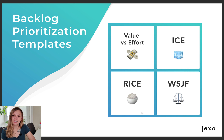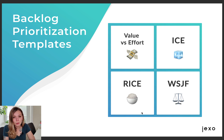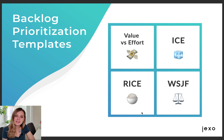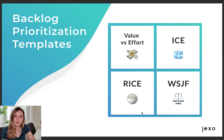A great first step to fixing these problems is to standardize your prioritization process. Prioritization templates allow you to create a repeatable, more transparent, and less random approach to prioritization, and also give you a great starting point for discussions with different stakeholders. Here you can see four prioritization techniques that allow you to calculate scores for your priorities and bring more data-driven decisions into your process.